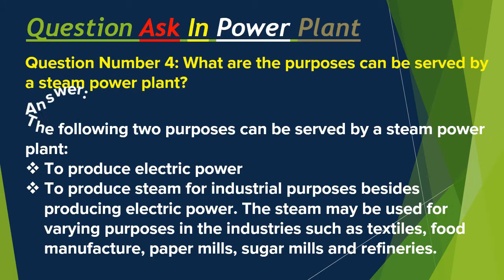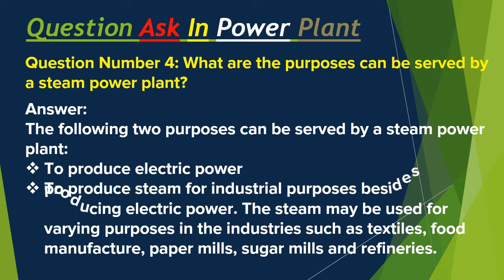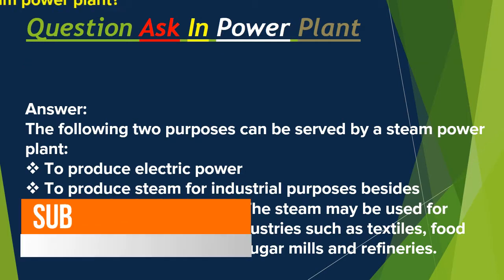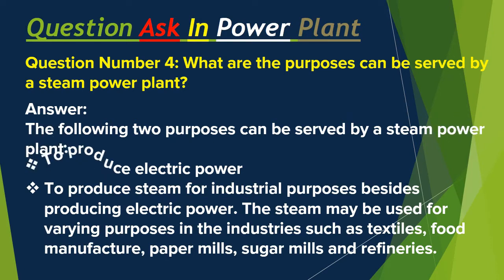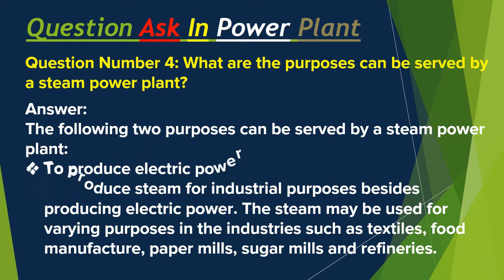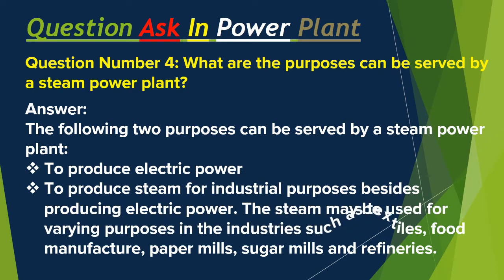Question number four: What are the purposes that can be served by a steam power plant? Answer: The following two purposes can be served by a steam power plant — to produce electric power, and to produce steam for industrial purposes. Besides producing electric power, the steam may be used for varying purposes in industries such as textiles, food manufacture, paper mills, sugar mills, and refineries.